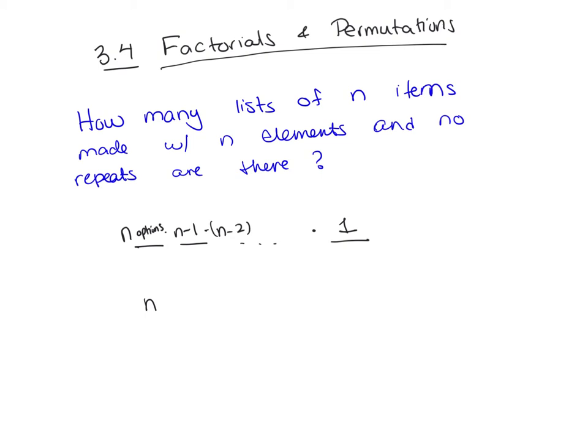So I have this special number, n times n minus 1 times n minus 2, all the way down to 1. And perhaps you recognize this is n factorial.